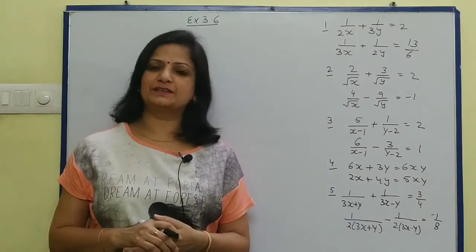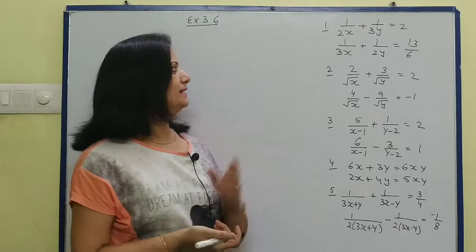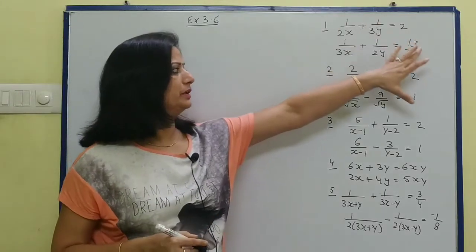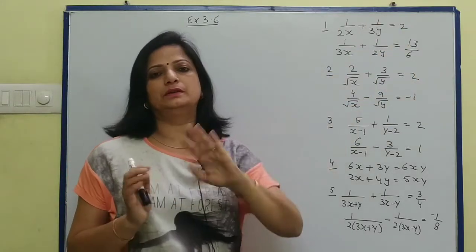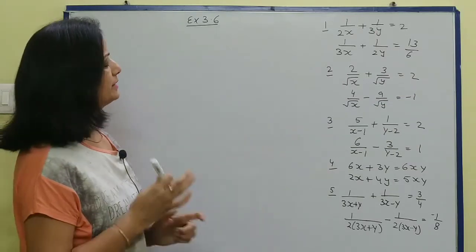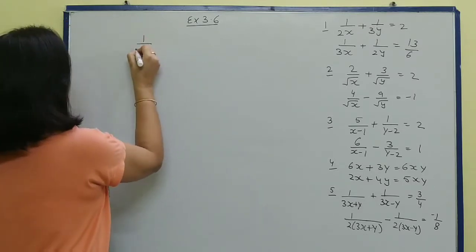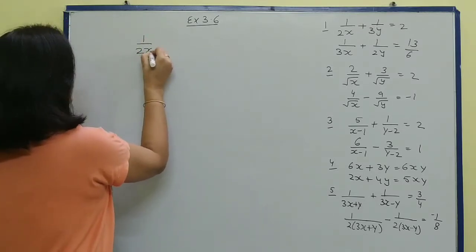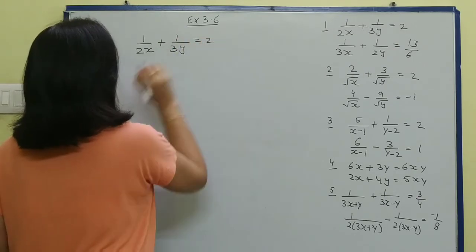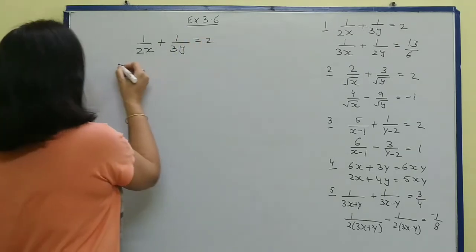Hello dear students, welcome once again to my channel Maths on Tips by A. Varma. Exercise 3.6 — when we reduce these linear equations into standard linear equations. Let's start. The first question we have is 1 upon 2x + 1 upon 3y equals to 2. The second equation is of similar type.